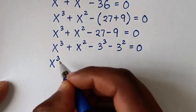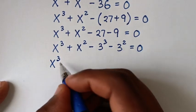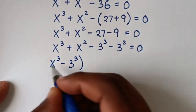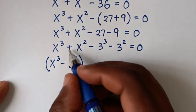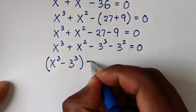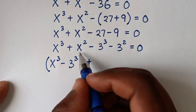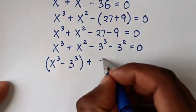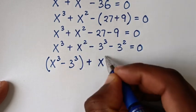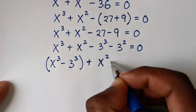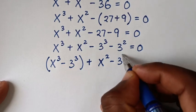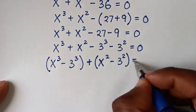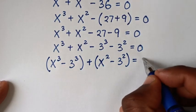So it will be x power 3 minus 3 power 3, grouped together, then plus, here with like power of 2 together, so it will be x power 2 minus 3 power 2, bracket, is equal to 0.